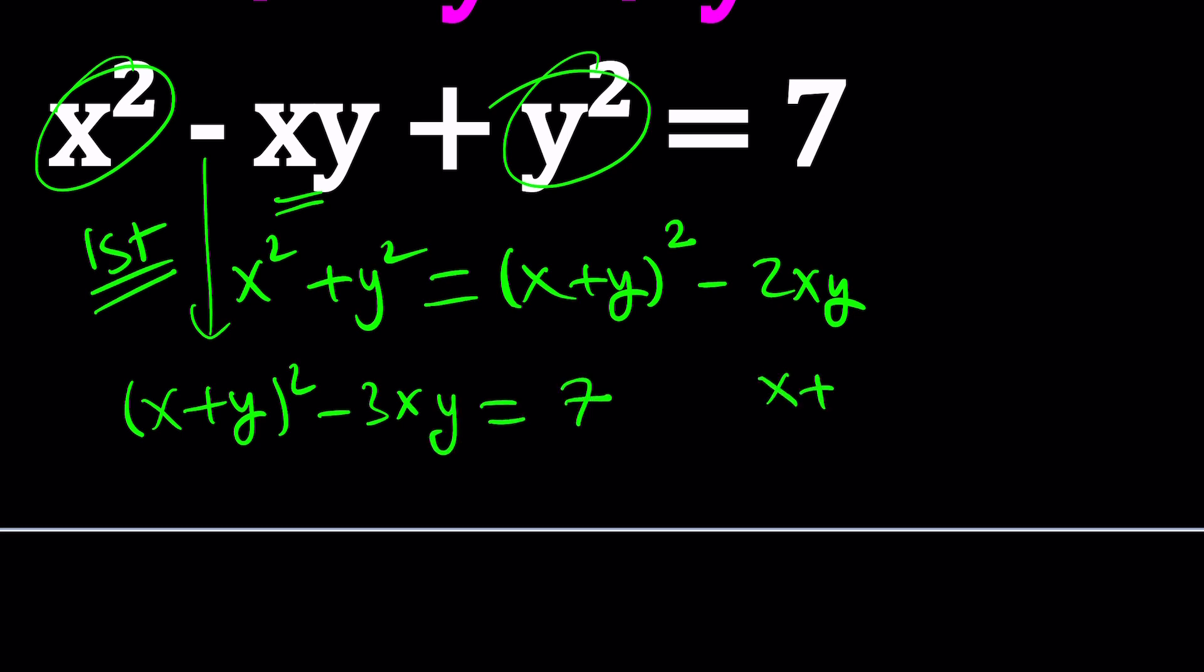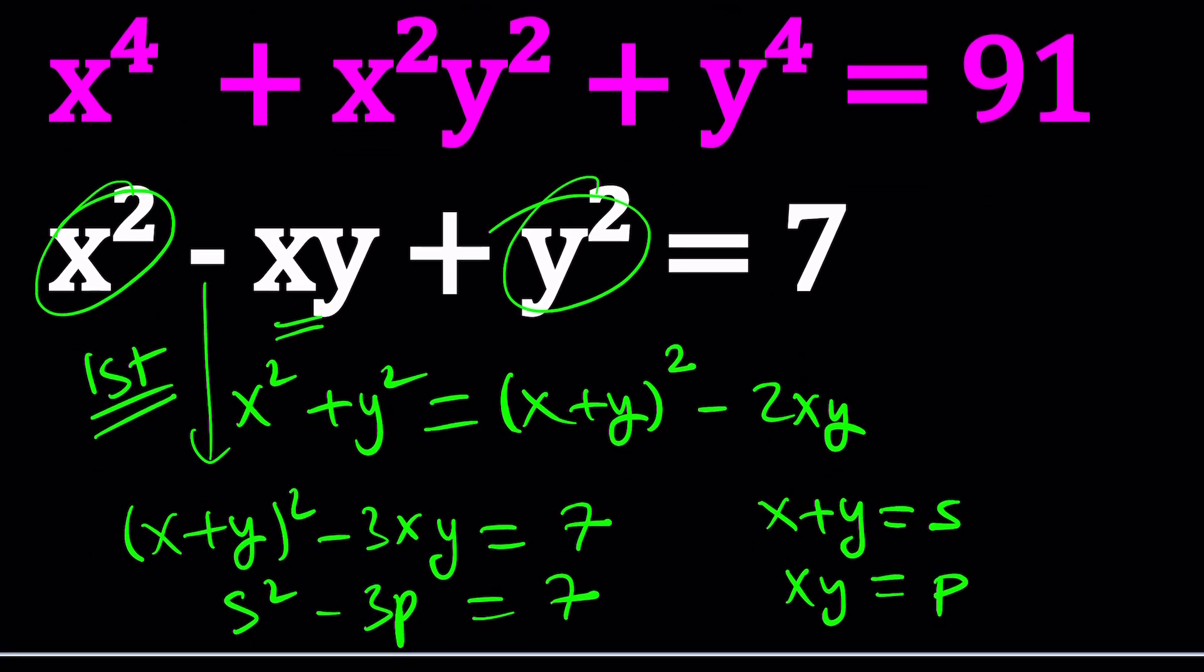So if x plus y is equal to s for sum and xy is equal to p for product, then we can write this as s squared minus 3p equals 7, which is a good thing to do. Now, how do we use that in the first equation?